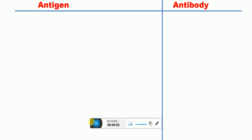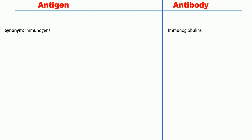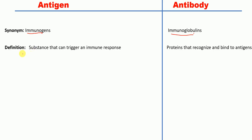Hello everyone. In this video today I'm going to talk about the differences between antigen and antibody. The first important point is the synonyms: antigens are also called immunogens, whereas antibodies are also called immunoglobulins.